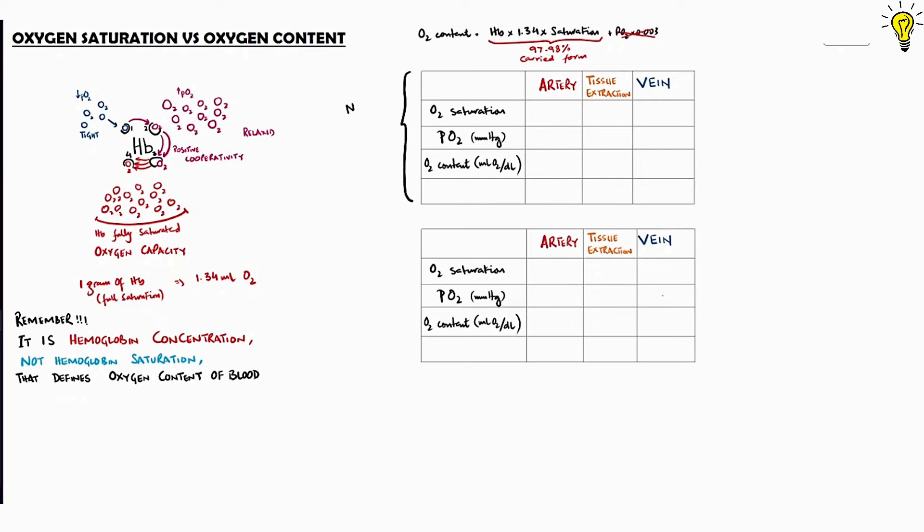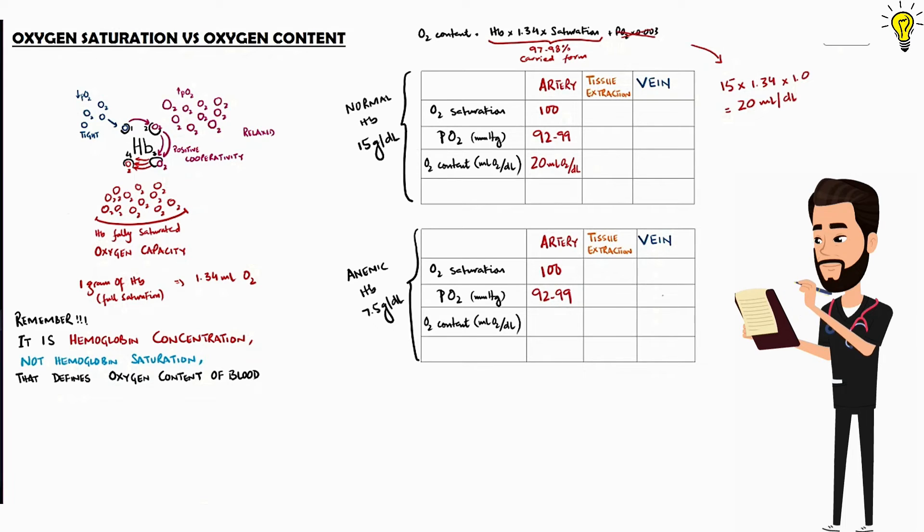Now I said it is the hemoglobin concentration that defines the oxygen content. So let's have a normal person with 15 grams per dl hemoglobin and let's compare it with anemic patient having hemoglobin concentration of 7.5 grams per dl. For hypothetical ease, let's keep oxygen saturation and PO2 levels in both patients at 100% and 92 mm of mercury respectively. The only difference is now the hemoglobin concentration. So for normal patient, how much will be the oxygen content in arteries? As per the equation, so 15 hemoglobin into 1.34 into 1 or 100% saturation. So 20 ml of oxygen being carried per dl of blood at 15 hemoglobin.